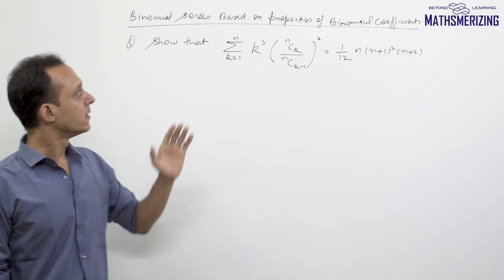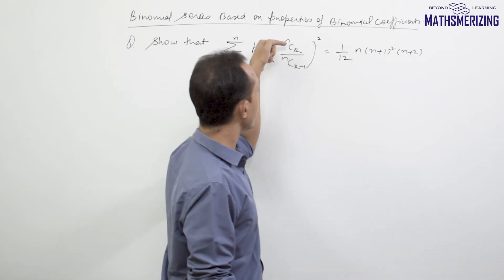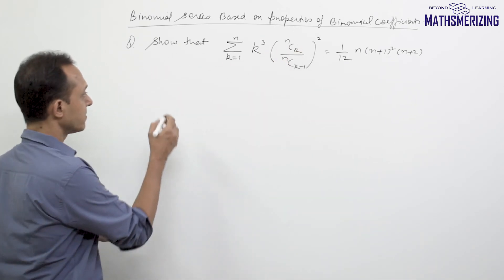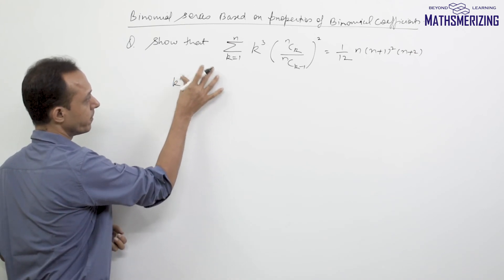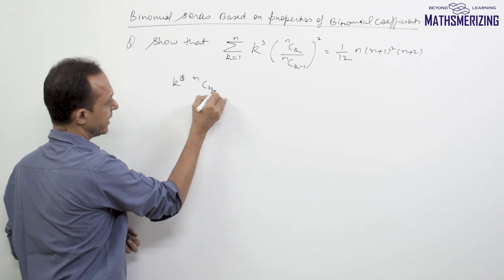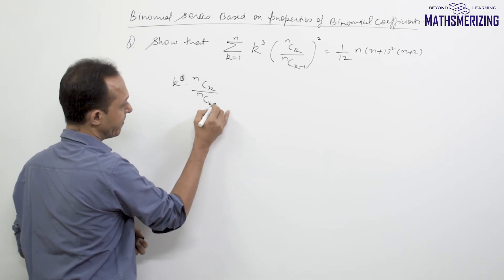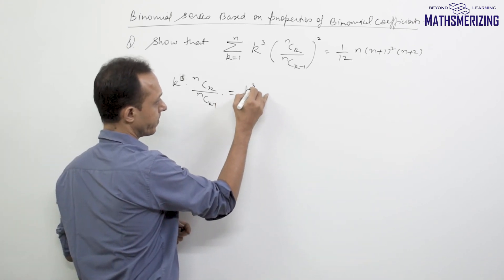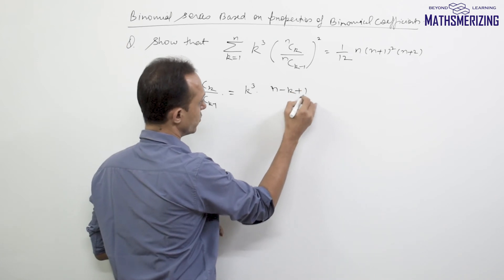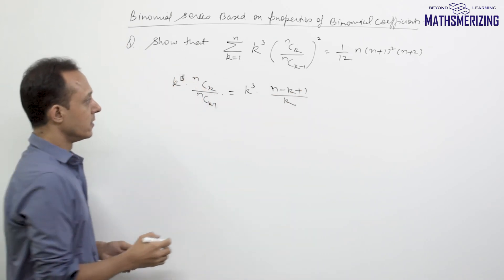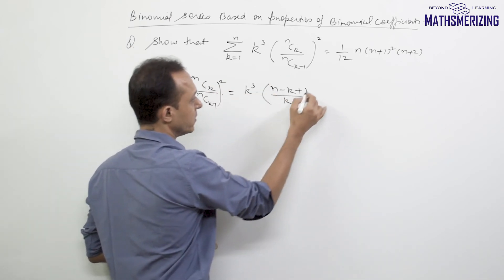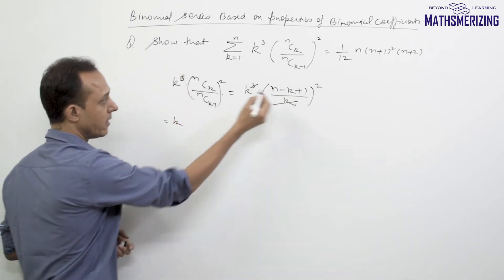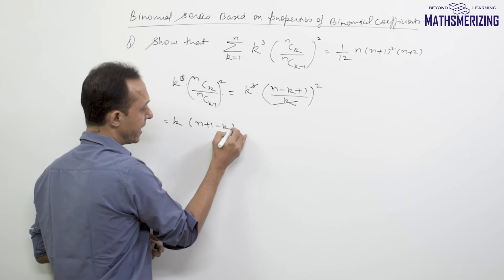Now we look at questions related to the property nCr/nCr-1 = (n-r+1)/r. I'll write the general term as k³ times nCk/nCk-1. Since nCr/nCr-1 = (n-k+1)/k, the general term becomes k³ times (n-k+1)/k, which is k² times (n+1-k)². I square it and cancel k², leaving k times (n+1-k)².